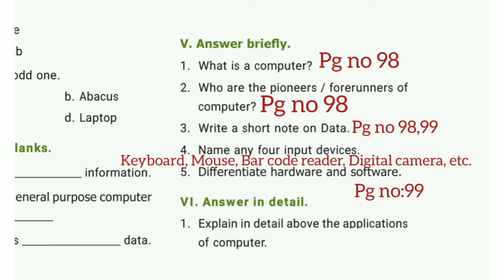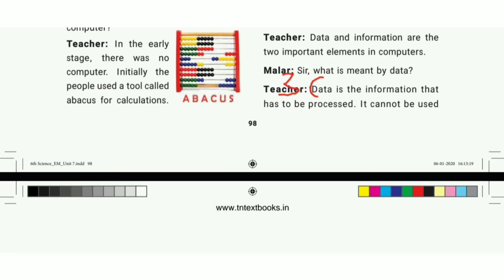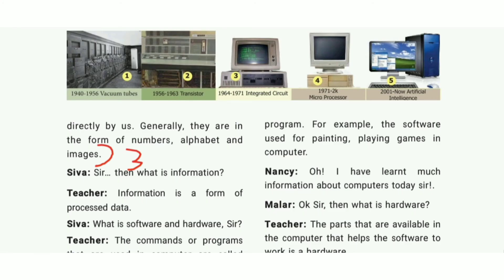Third question: Write a short note on data. Take page number 98, last paragraph. Data is raw information that has to be processed. It cannot be used directly by us. Generally, they are in the form of numbers, alphabet, and images. Refer page number 98 through to page 99 for the complete answer.